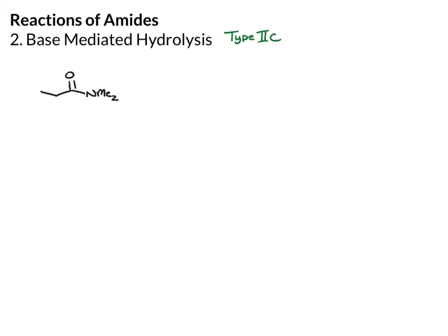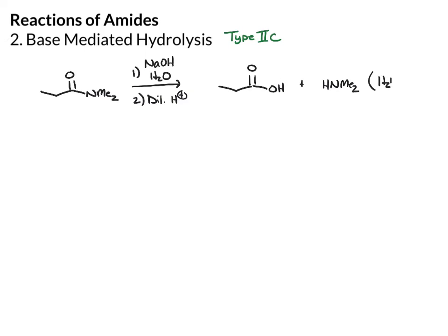That could, of course, be just one R group or NH2 — it'll work the same. Like the ester hydrolysis, we need in the first step base and water. In the second step, we need to add dilute acid to protonate the products we get. The end result is that you end up with the carboxylic acid plus the amine, or you might want to write this as the protonated amine, because under acidic conditions the acid will protonate the amine.